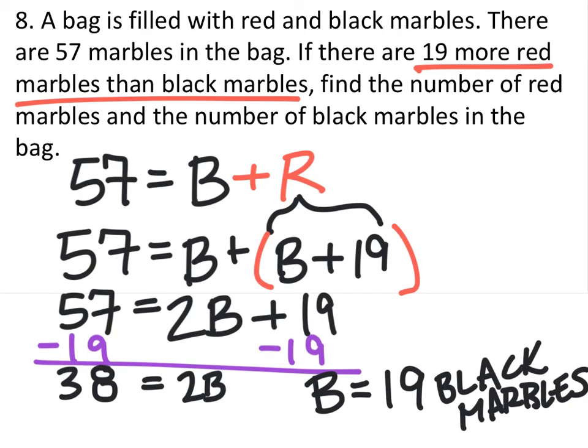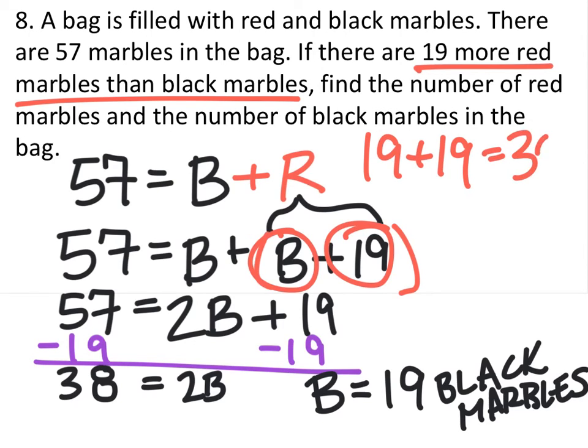But we need to figure out how many red marbles there are. Since we know there are 19 black marbles, we're going to add 19 to that. So 19 plus 19 will tell us how many red marbles there are. There are 38 red marbles.